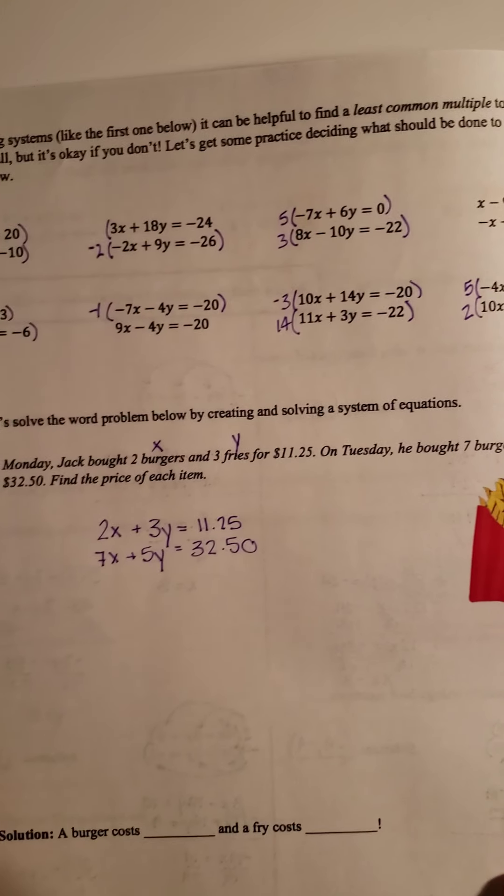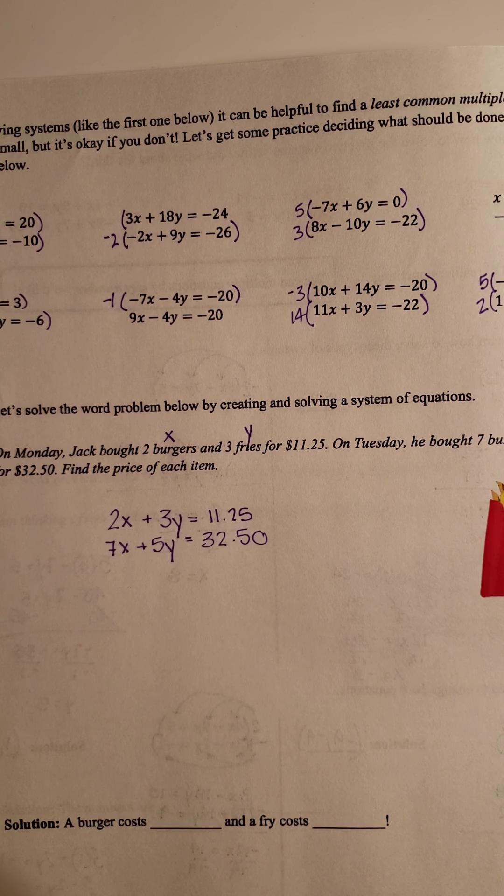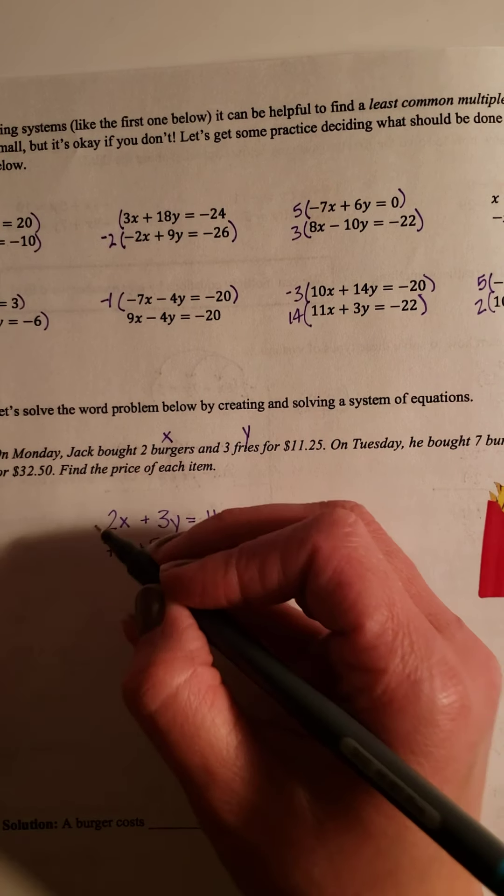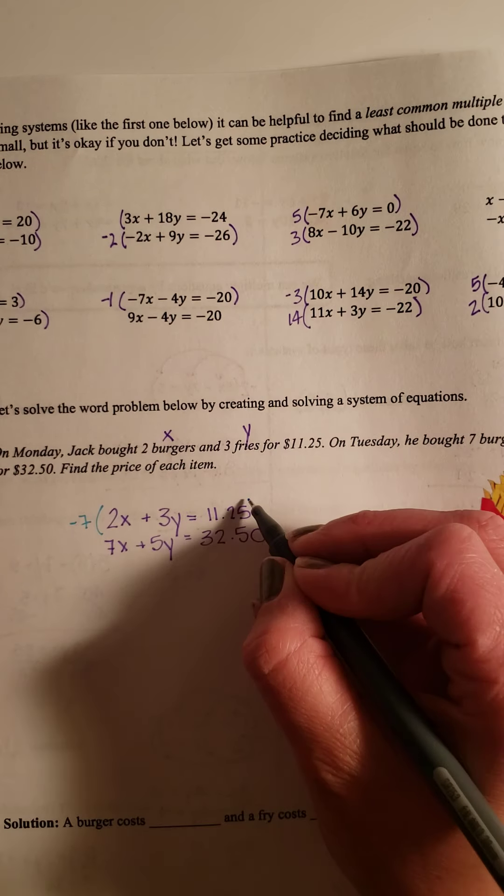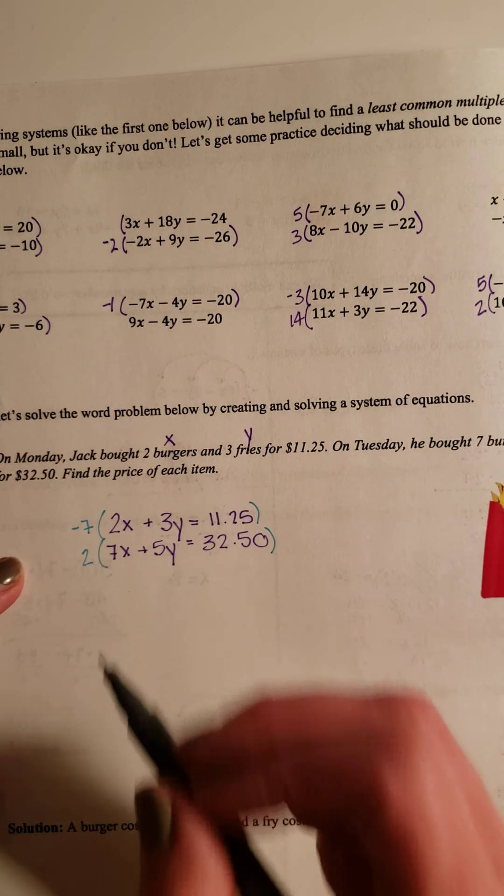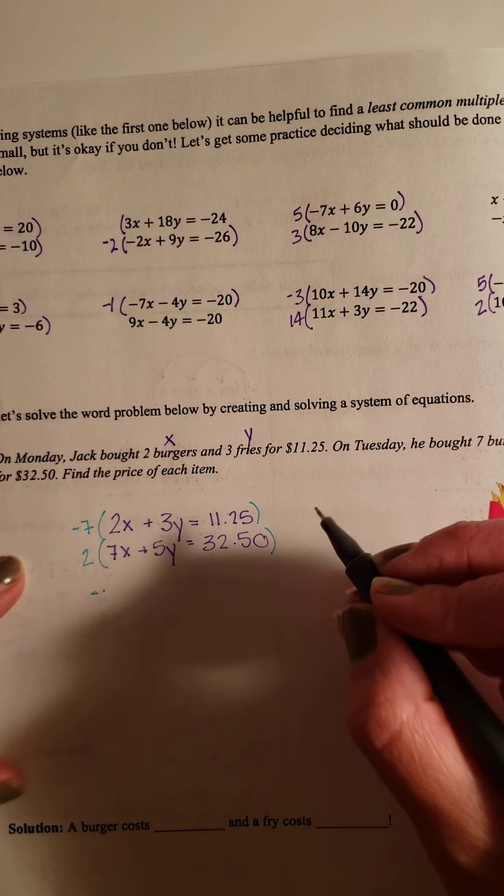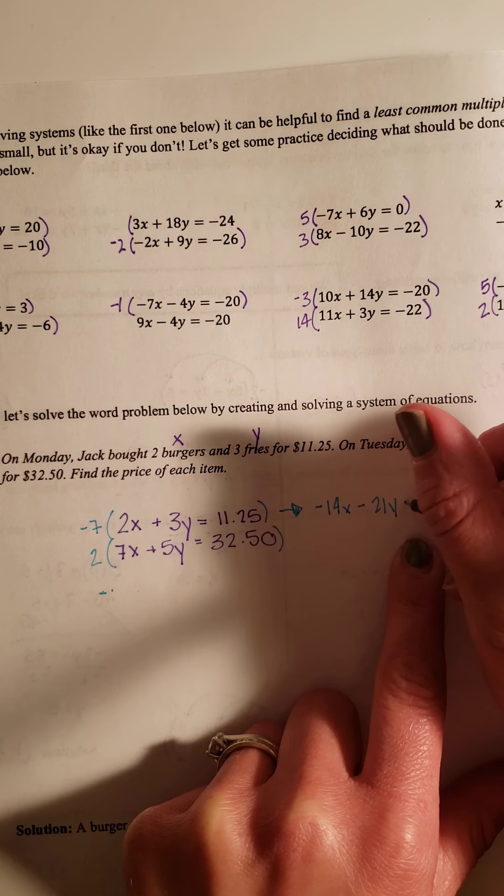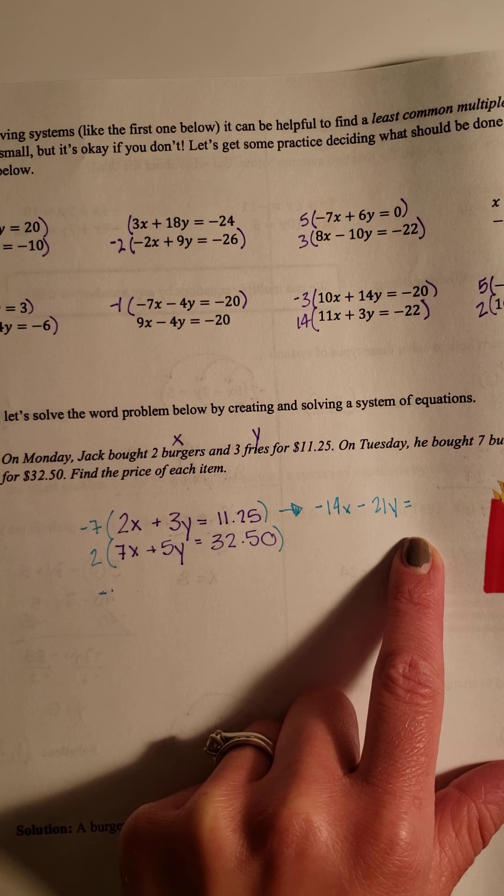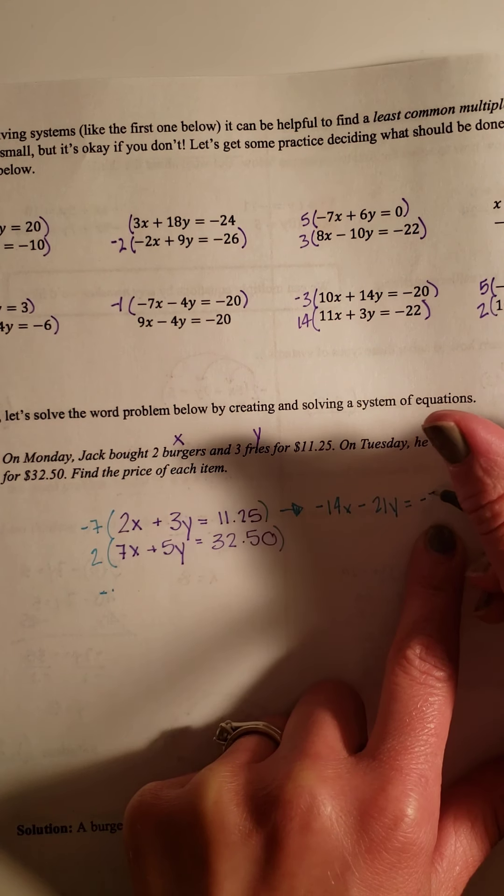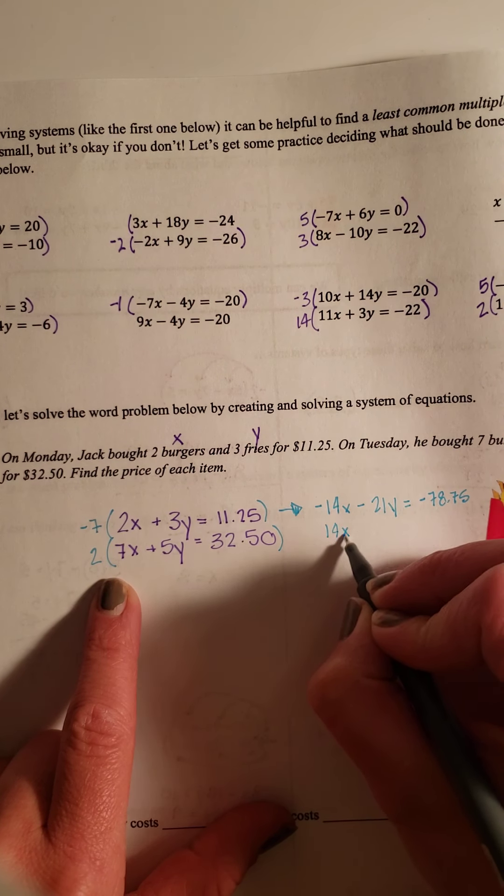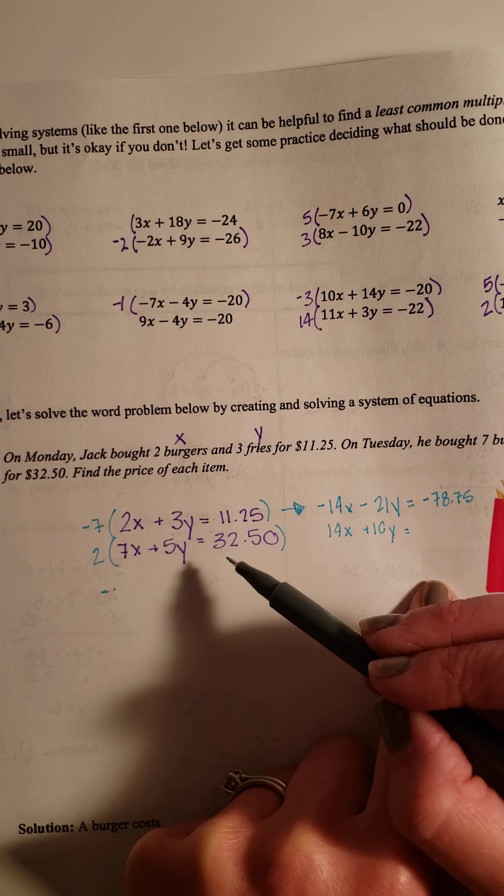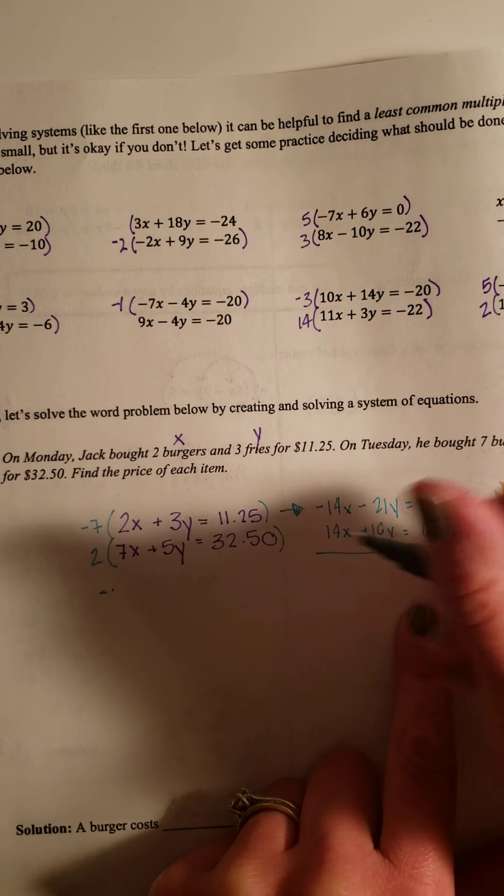So they're both in standard form. That's one reason why I would use elimination. They're both in standard form. What would I get them to to cancel? I'd probably get those to 14 and those to 15. It doesn't really matter which one. So I'll take these ones. Multiply this by a -7 and this one by a positive 2. So -7 times 2. -14X - 21Y = 11.25 times 7. And then, -78.75. On the bottom, positive 14X + 10Y = and if I double this, 32.65.